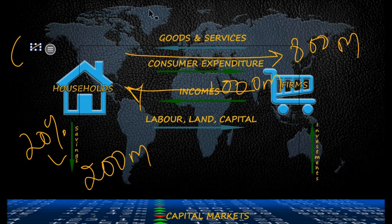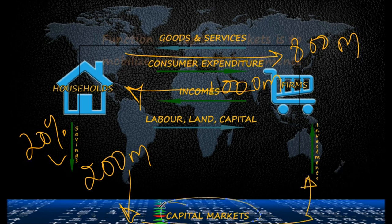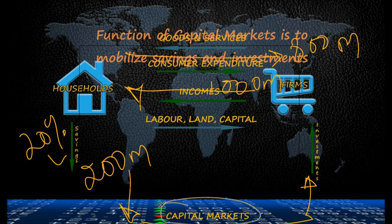In the real world, the savings by households goes into the financial markets — either into stocks, bonds, deposits in banks, etc. Firms, on the other hand, need to fund their cash shortfall and hence borrow from the financial markets. This market where firms borrow and where household savings flow is called the capital markets.